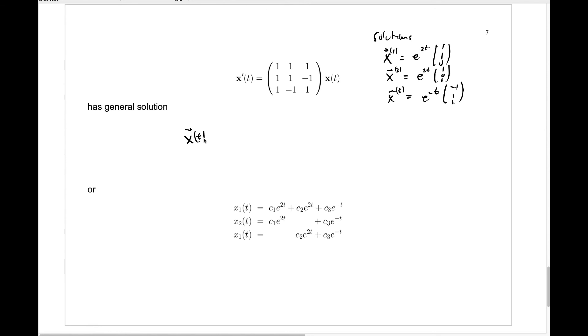plus c2 times x2 plus c3 times x3. And we can write that as c1 e to the 2t times (1, 1, 0) plus c2 e to the 2t times (1, 0, 1) plus c3 times e to the minus t times (-1, 1, 1).